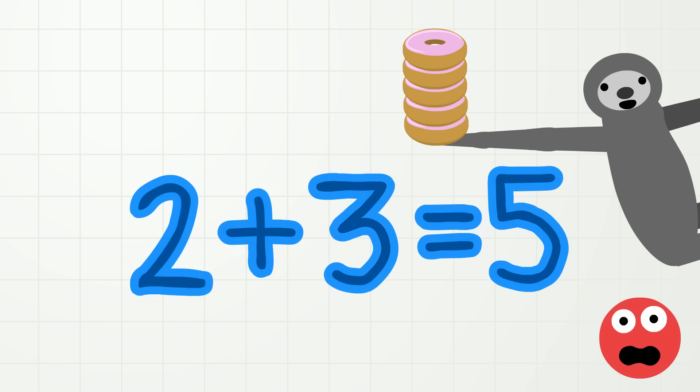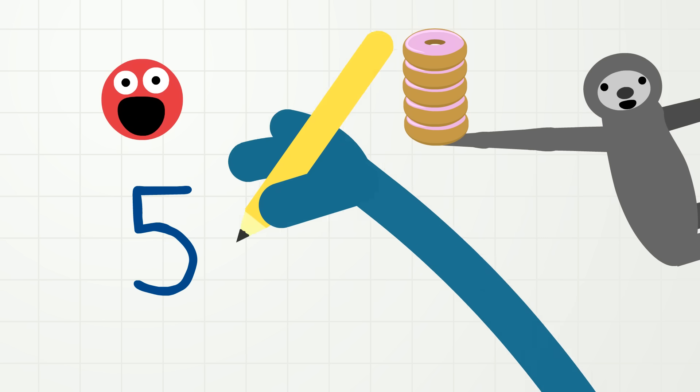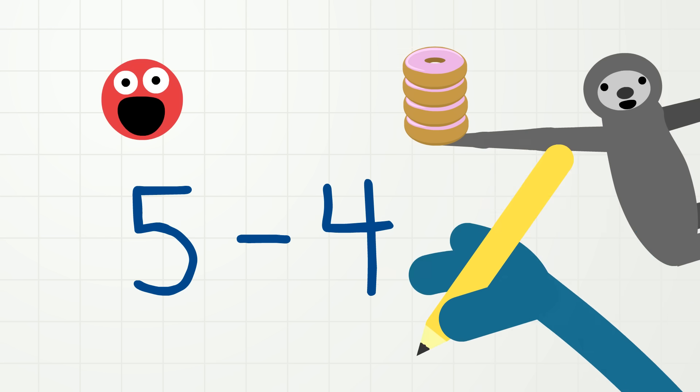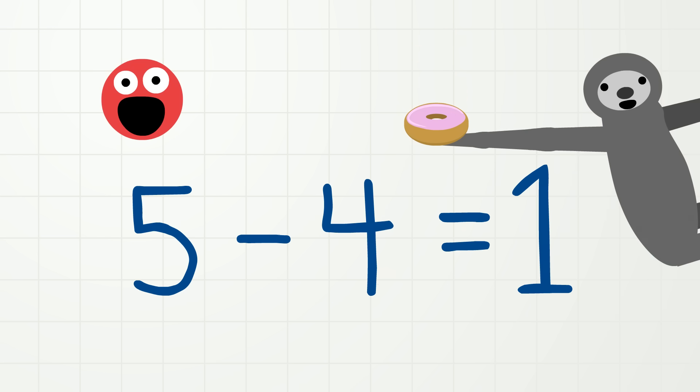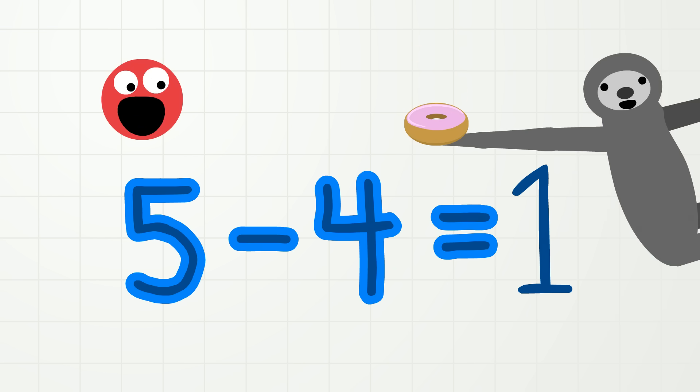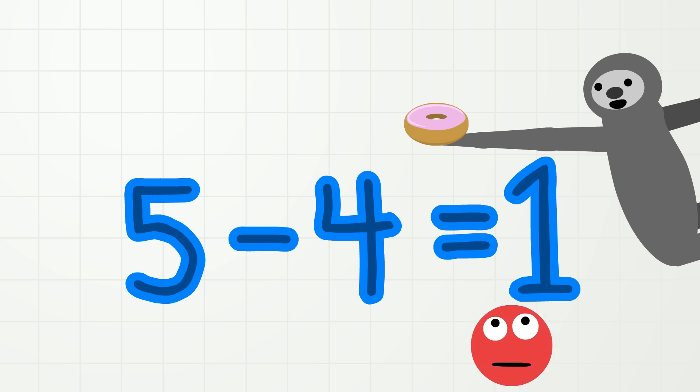Now subtracting! Five donuts minus four donuts equals one donut! Five minus four equals one! Five minus four equals one! Sad sloth!